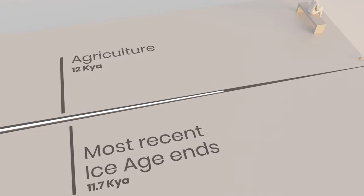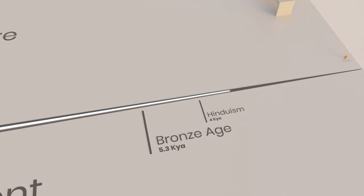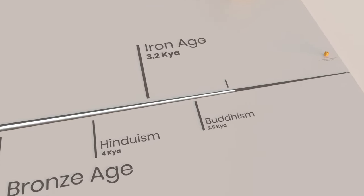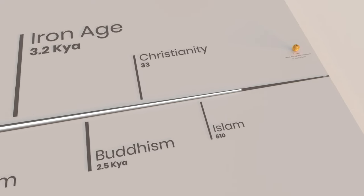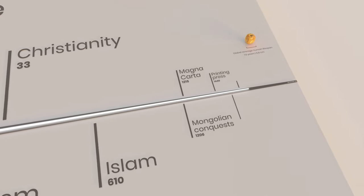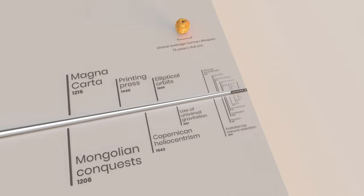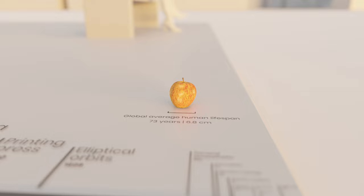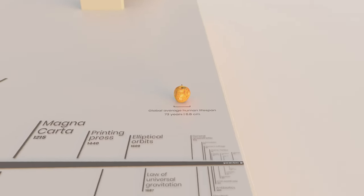From there comes the metallurgical working of bronze and iron to fashion more durable tools and weapons, and the formulation of key religious ideas that would come to dominate the spiritual thinking of most people in modern history. Then in a relatively short space of time we see a cascading set of breakthroughs, including the invention of the printing press, understanding of our physical place in the universe, and the development of the scientific method. This is where you now find yourself, at the leading edge of an incredible story of evolutionary innovation and struggle.